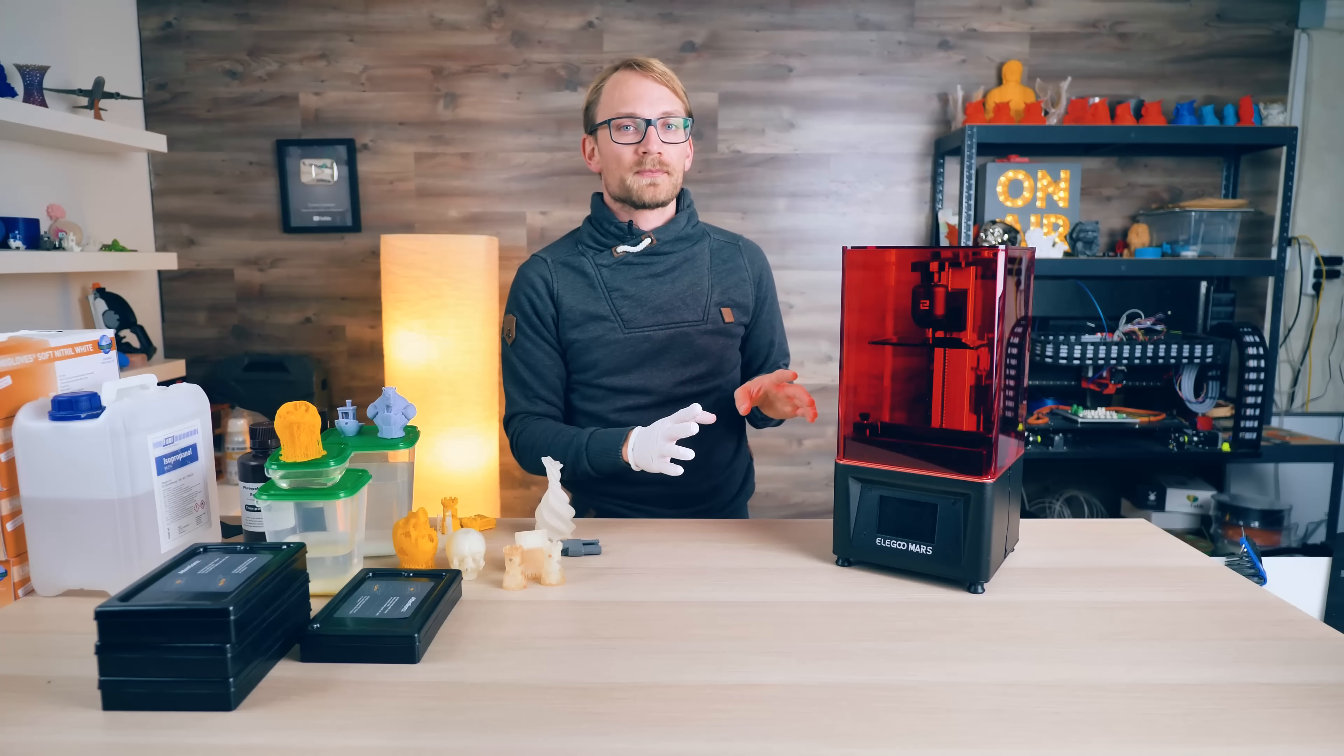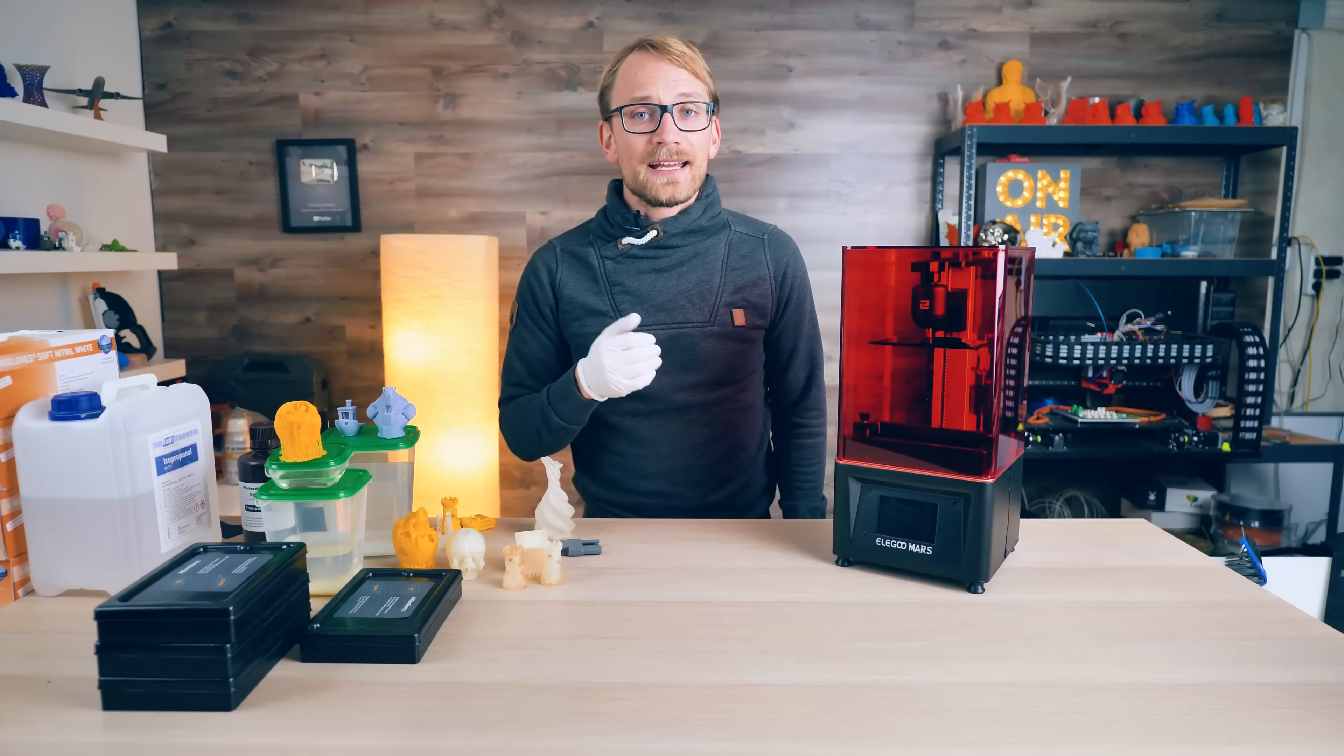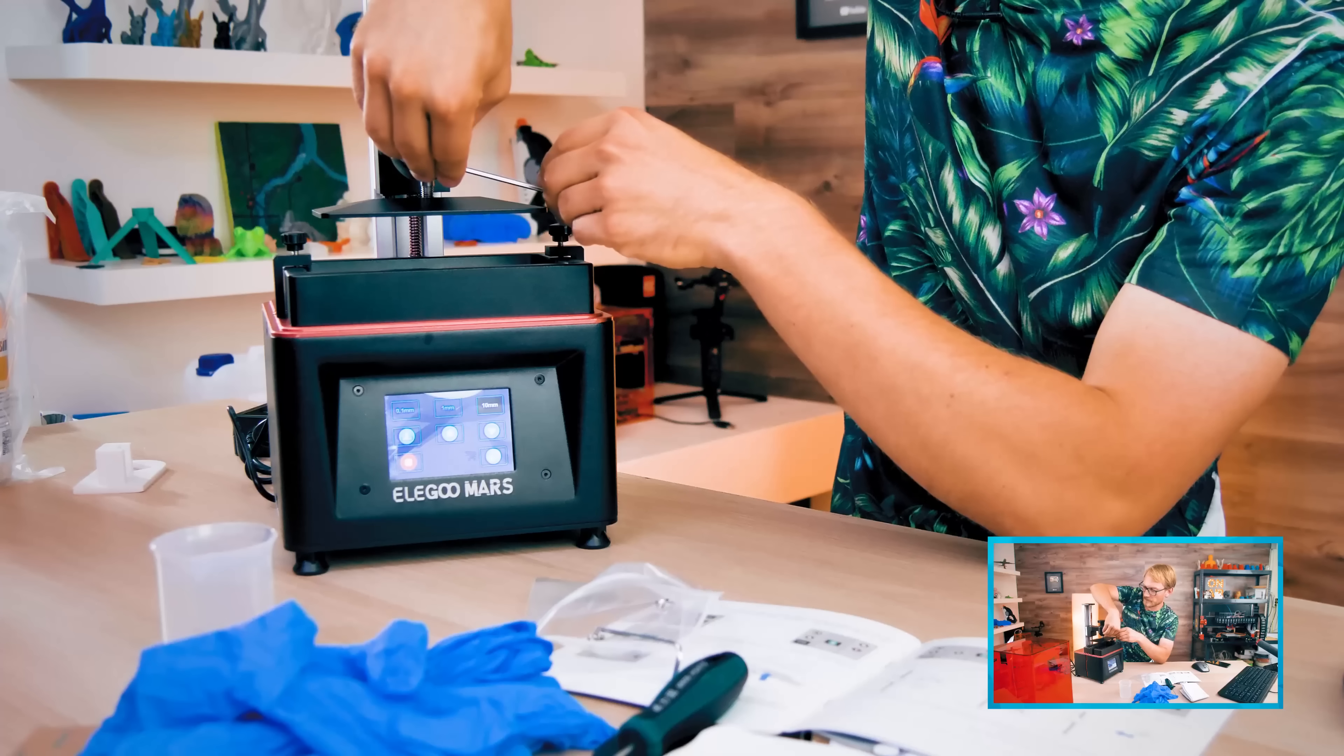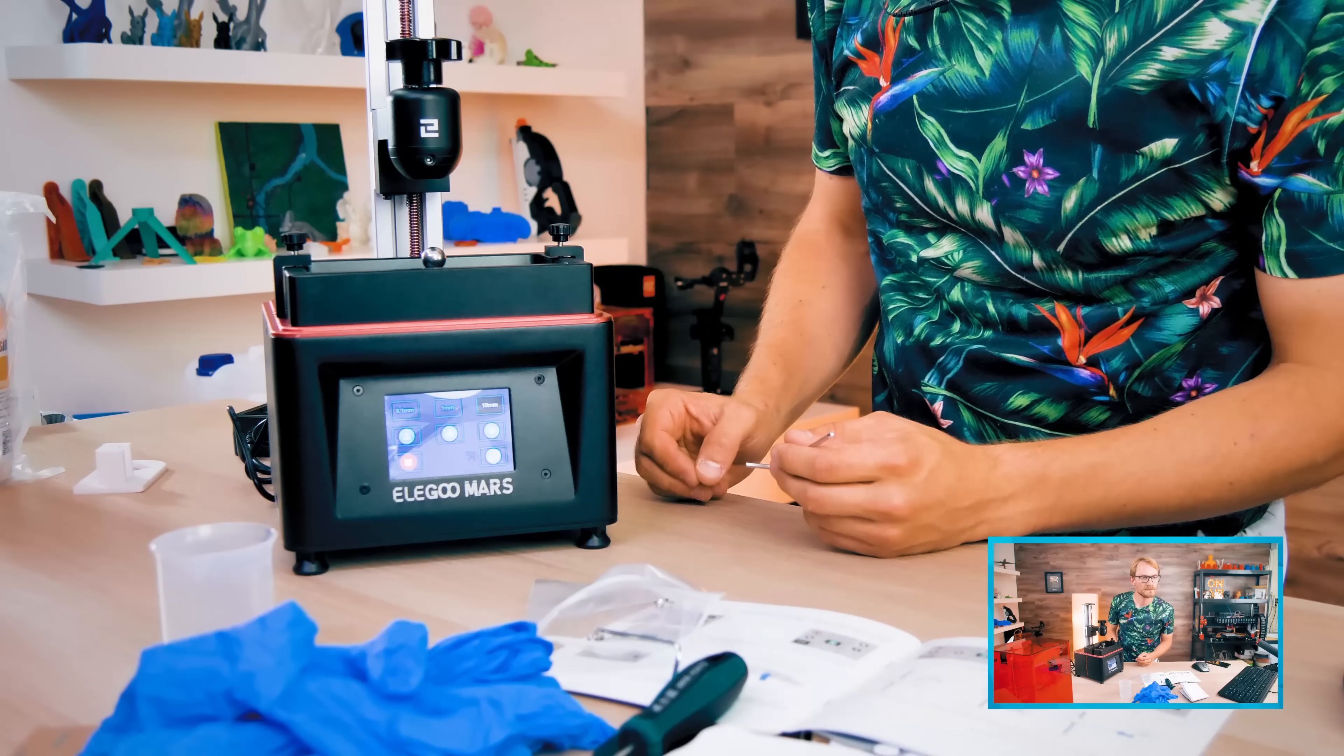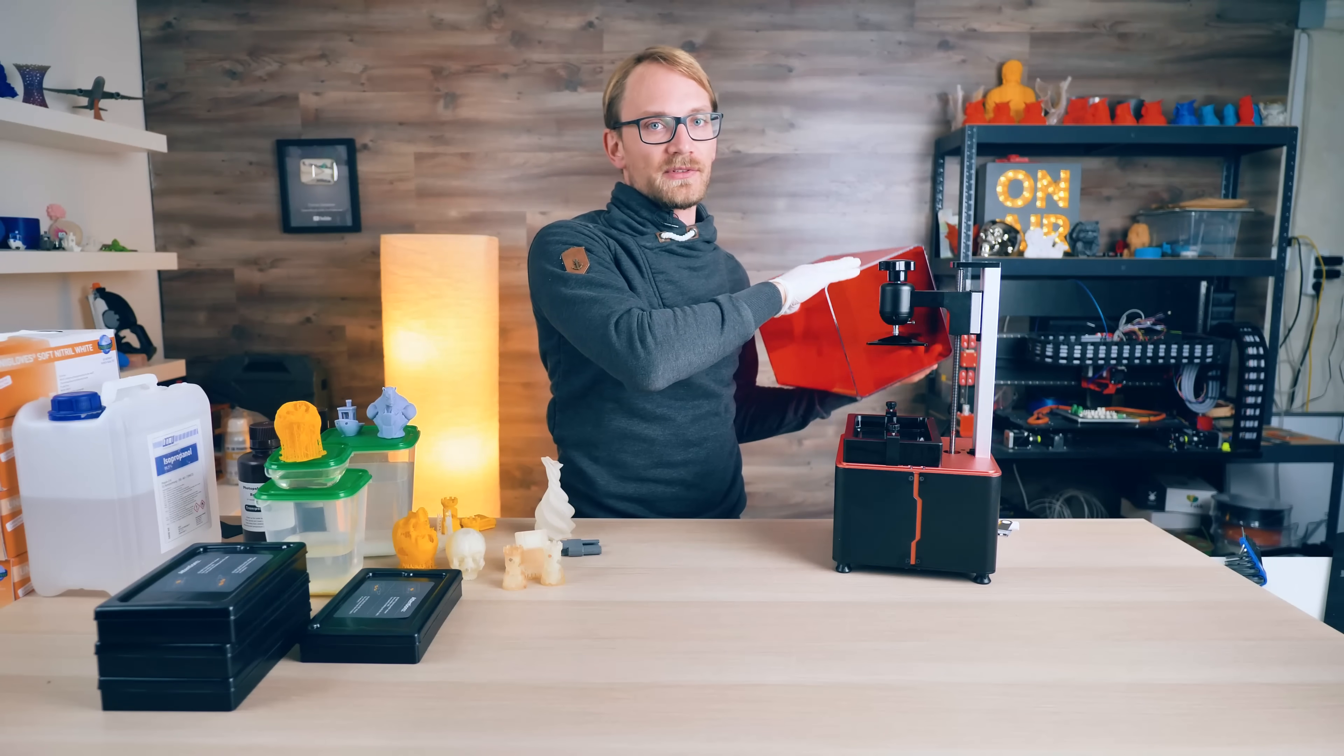But thankfully, the actual screen part itself, the actual panel, is only about 30 bucks in materials if you can manage to swap it yourself. If not, well, too bad. And of course, the LCD is right underneath that print surface, so if your Mars is missing that one retention screw, like mine did, the aluminum bed will shoot straight down towards the LCD when you level the build plate for the first time. It's a quality control issue that shouldn't happen, so check that your printer has a grub screw or something back here before you loosen the bed with these two screws for leveling.